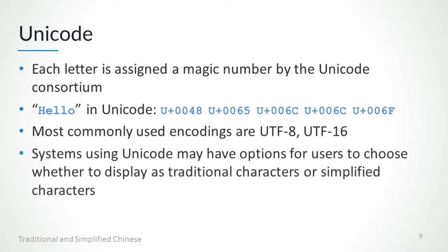Besides Big5 and GB encodings, Unicode has been widely accepted in the region as it can be used to encode both traditional and simplified Chinese, and it is often considered politically neutral. Unicode was an effort to create a single character set that included every reasonable writing system on the planet. It is often misunderstood that Unicode is a 16-bit code that can represent around 65,000 characters. In fact, all letters in Unicode are mapped to something called a code point, which is a magic number assigned by the Unicode Consortium, and it can be considered independent of the digital representation. For example, 'hello' in Unicode can be thought of as five hexadecimal numbers as shown in the slide.